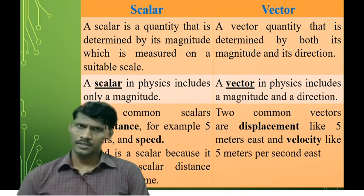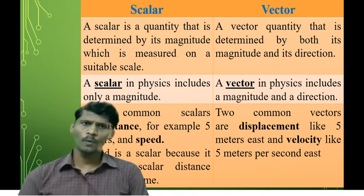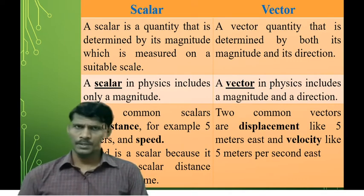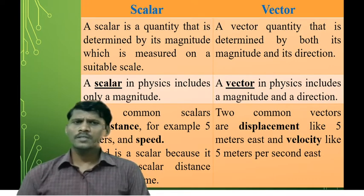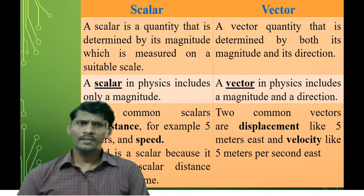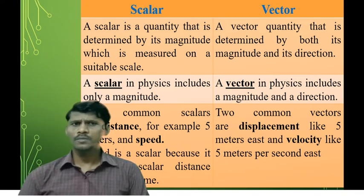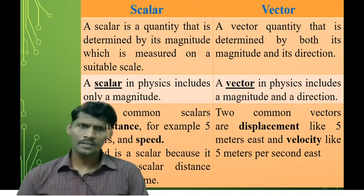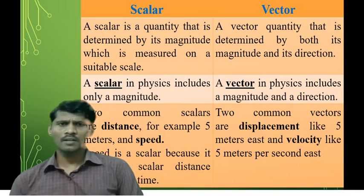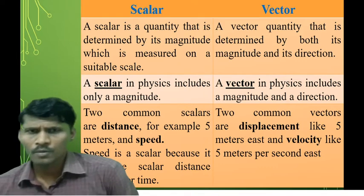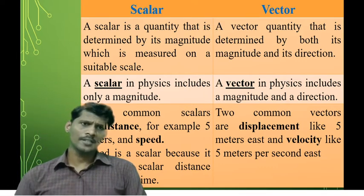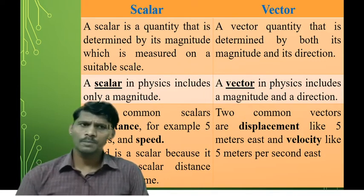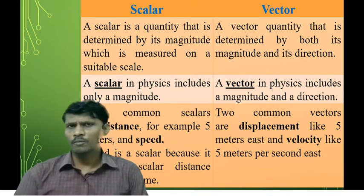Two common scalars are distance — for example, 5 meters — and speed. Two common vectors are displacement — like 5 meters east — and velocity. 5 meters long is a scalar quantity because there is no direction, whereas 5 meters east is a vector.